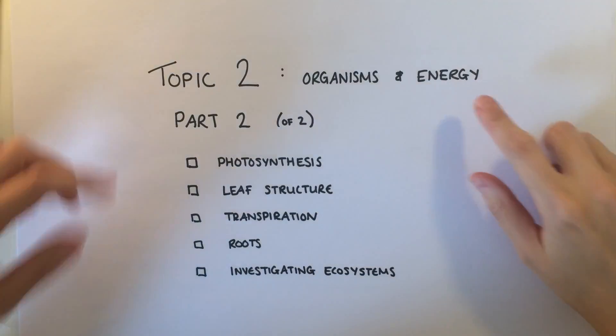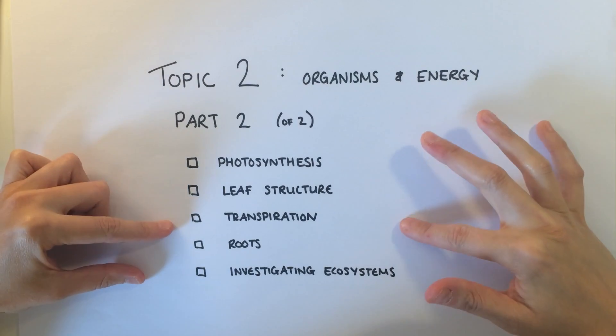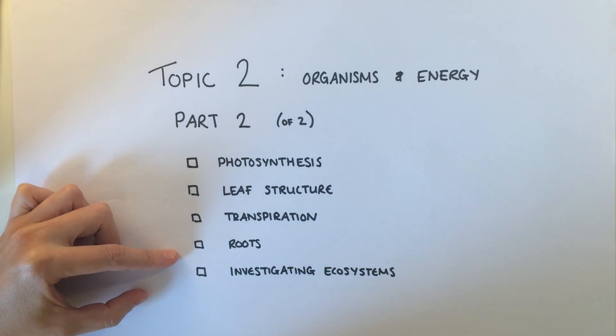Additional science biology, topic 2: organisms and energy. The second part covers photosynthesis, leaf structure, transpiration, roots, and investigating ecosystems.